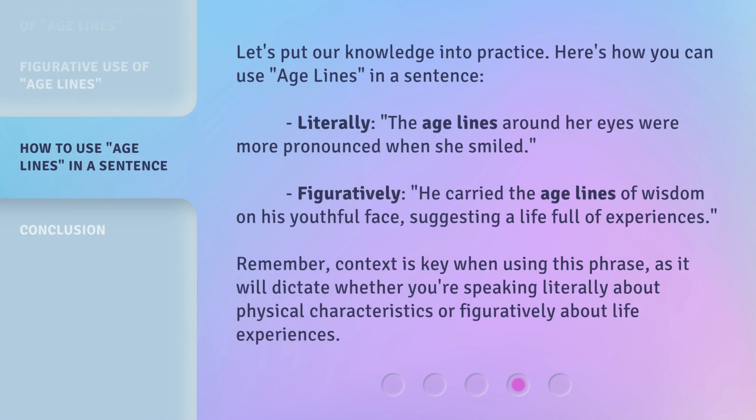Let's put our knowledge into practice. Here's how you can use age lines in a sentence. Literally: the age lines around her eyes were more pronounced when she smiled. Figuratively: he carried the age lines of wisdom on his youthful face, suggesting a life full of experiences. Remember, context is key when using this phrase, as it will dictate whether you're speaking literally about physical characteristics or figuratively about life experiences.